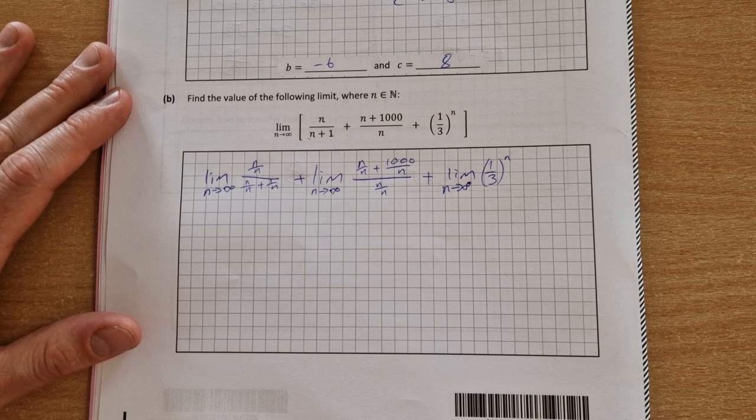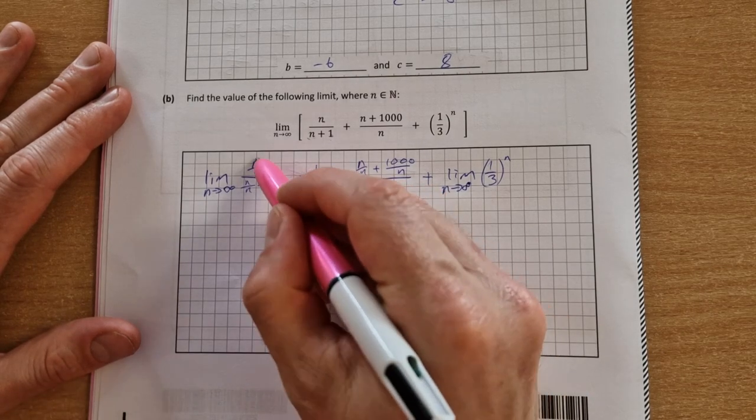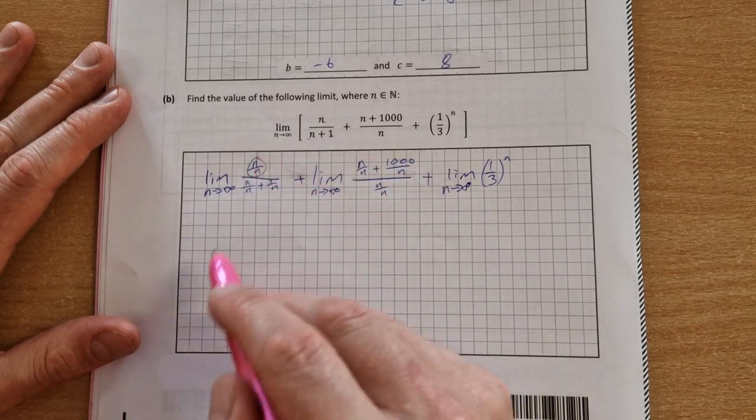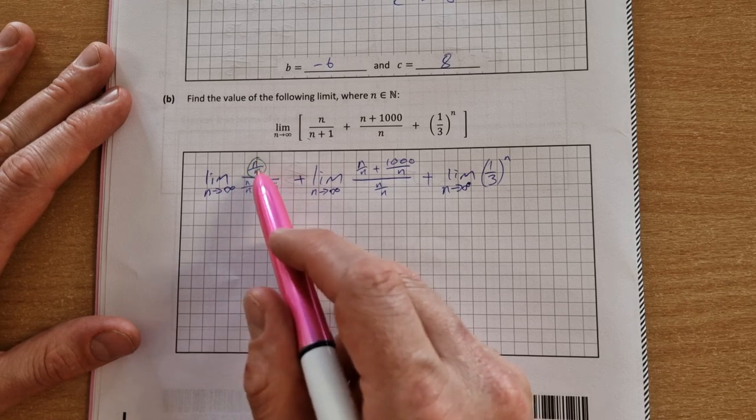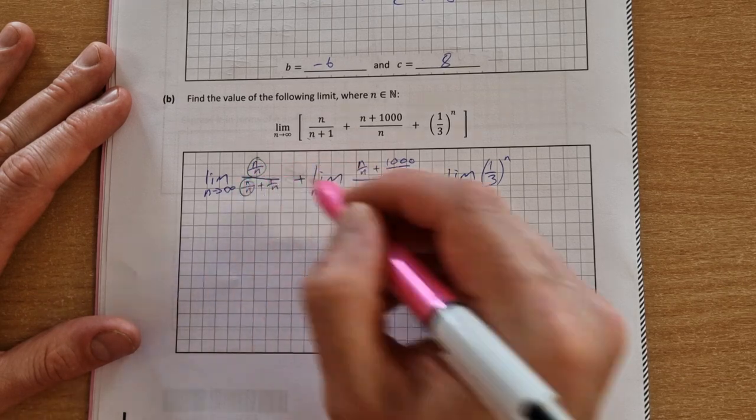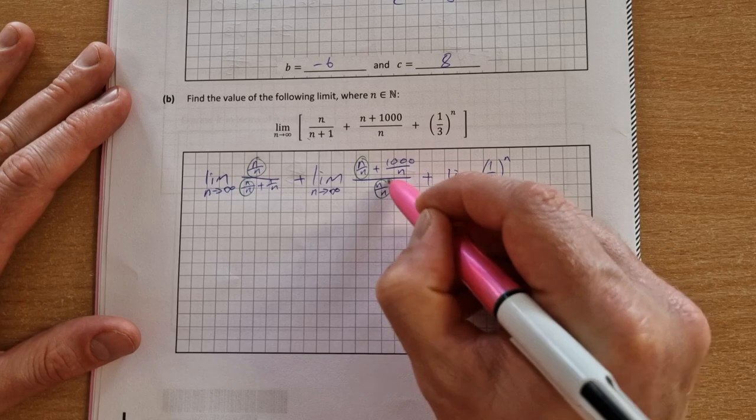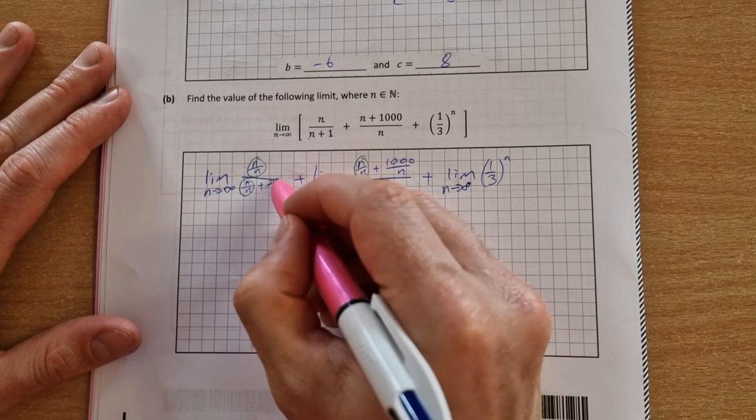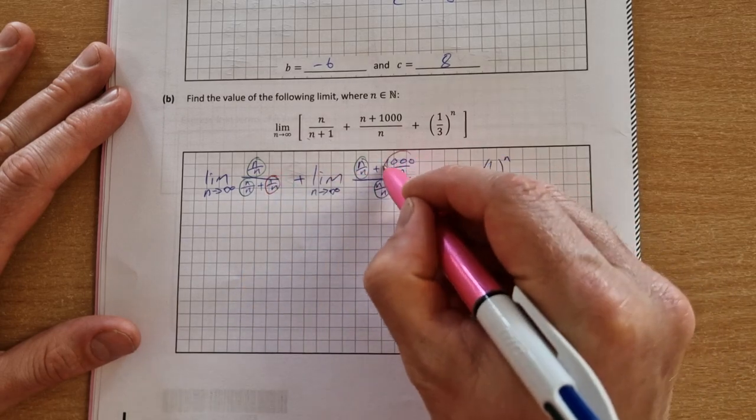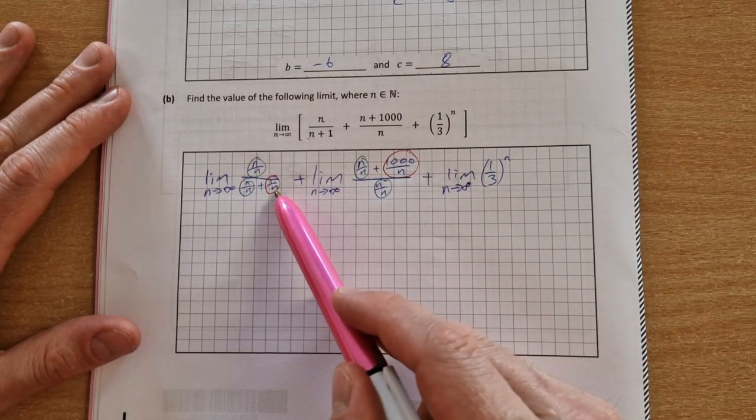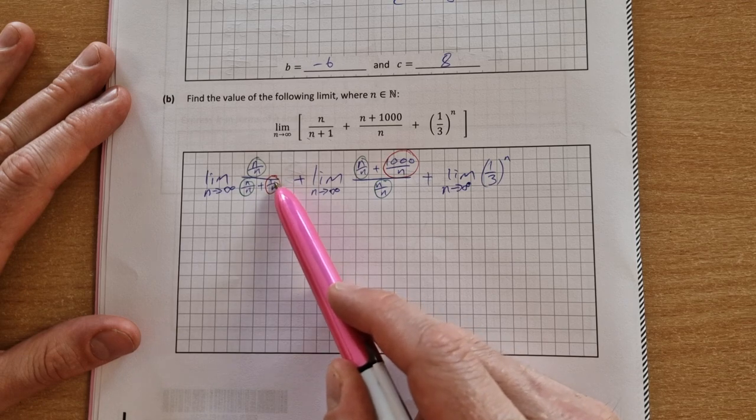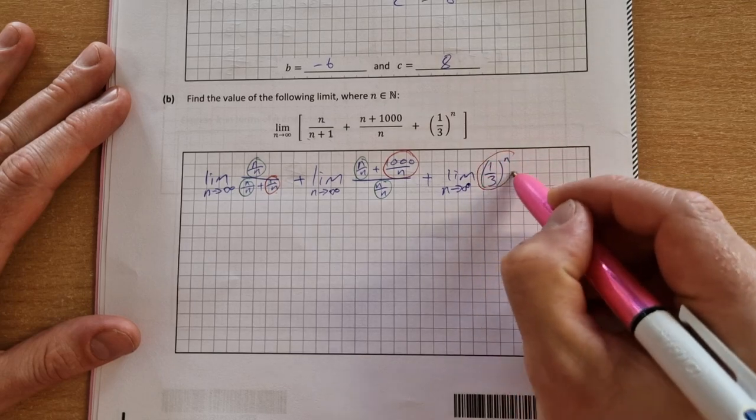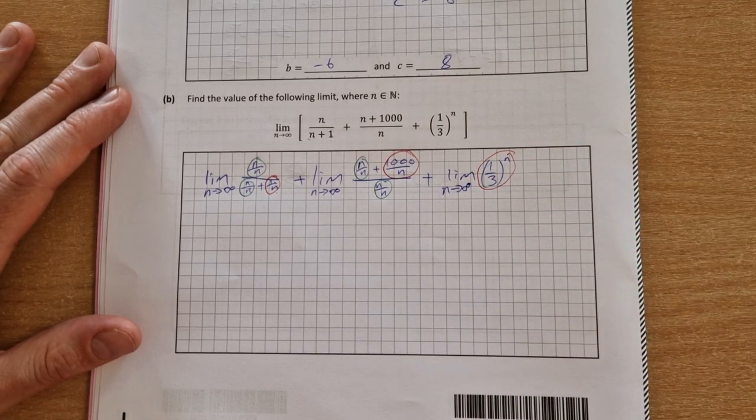Now when we take these limits here, first of all n over n regardless of the size of n, that's always equal to 1. So if it was 2 over 2, 3 over 3, a million over a million, it's always equal to 1. So all of these ones that I circle in green are equal to 1. And these ones that I'm going to circle in red, 1 over n and a thousand over n, as n gets bigger that fraction will get smaller, so these ones here tend towards 0. And a third to the power of n also tends towards 0.